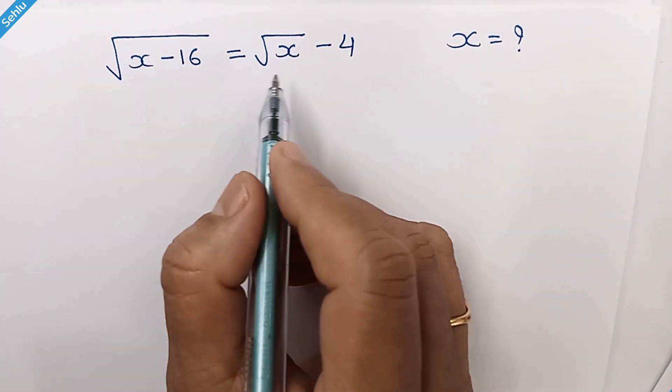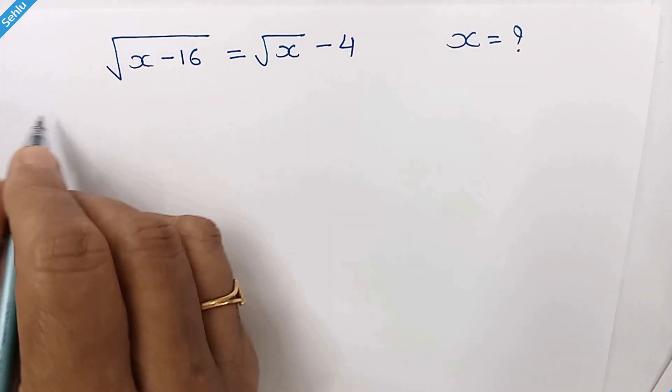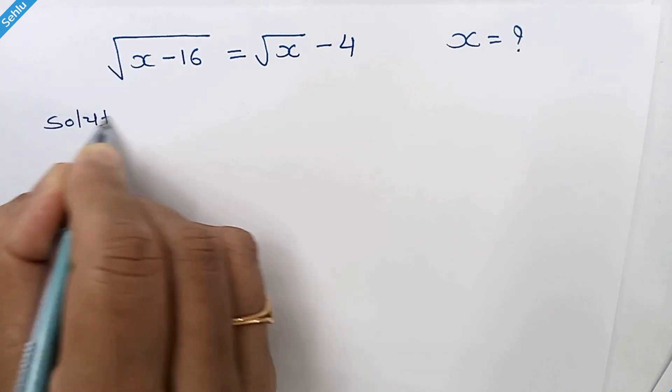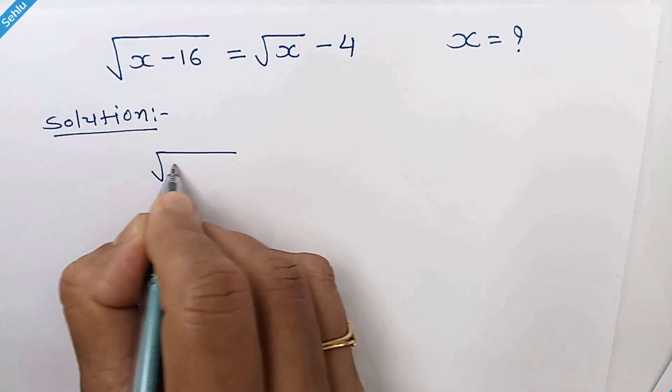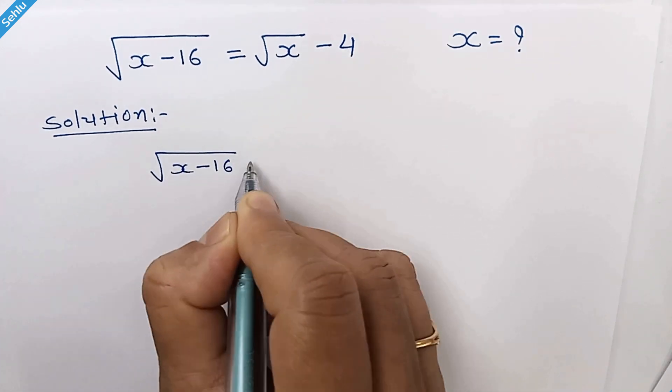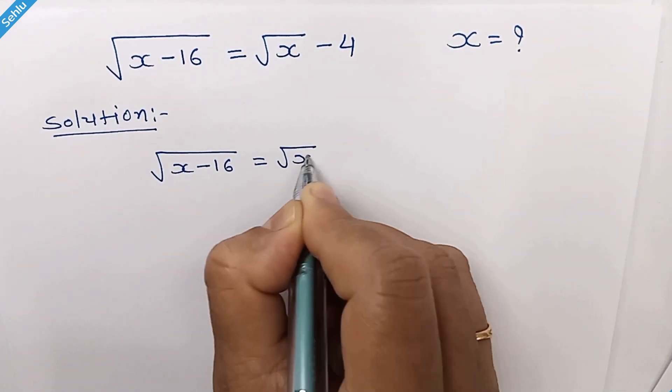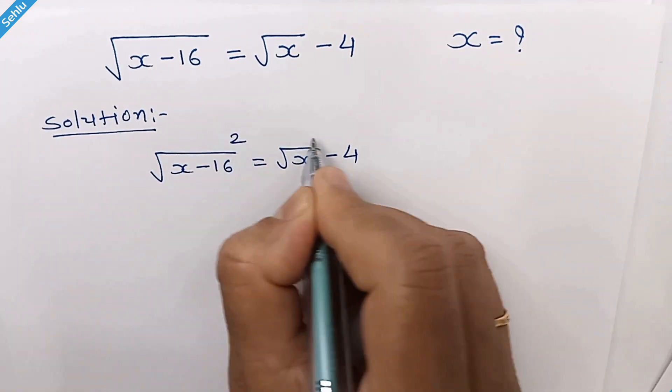Hello friends, it's a nice algebraic problem. Let's solve this. Our question is square root of x minus 16 is equal to square root x minus 4. Squaring both sides...